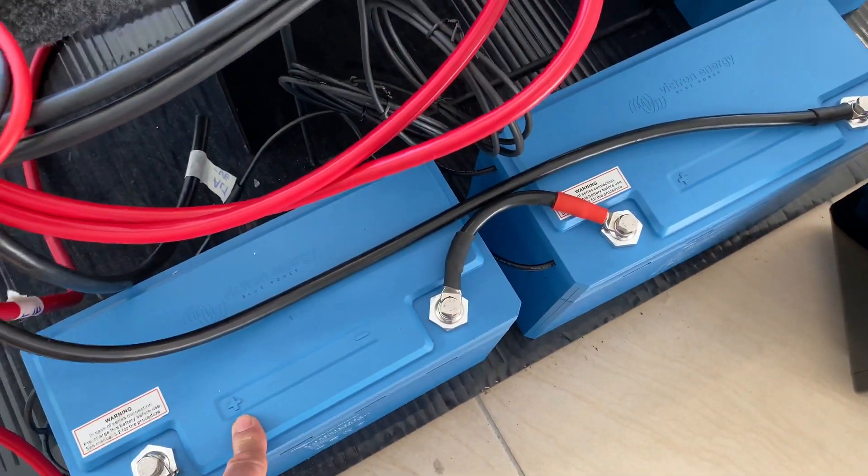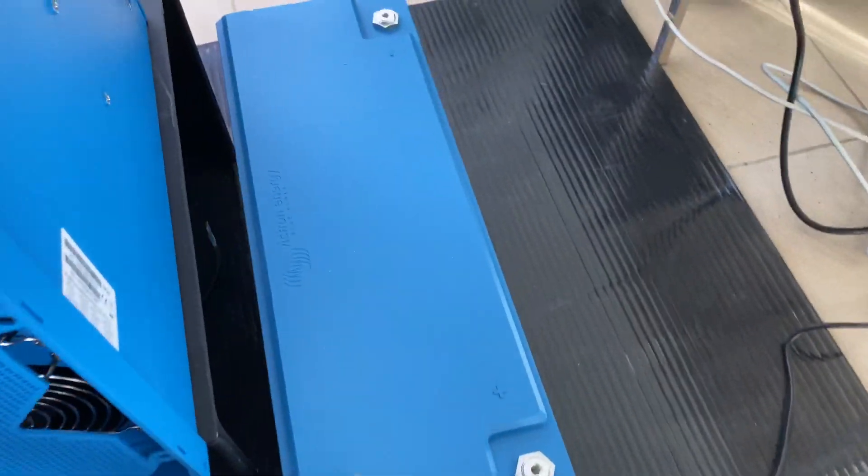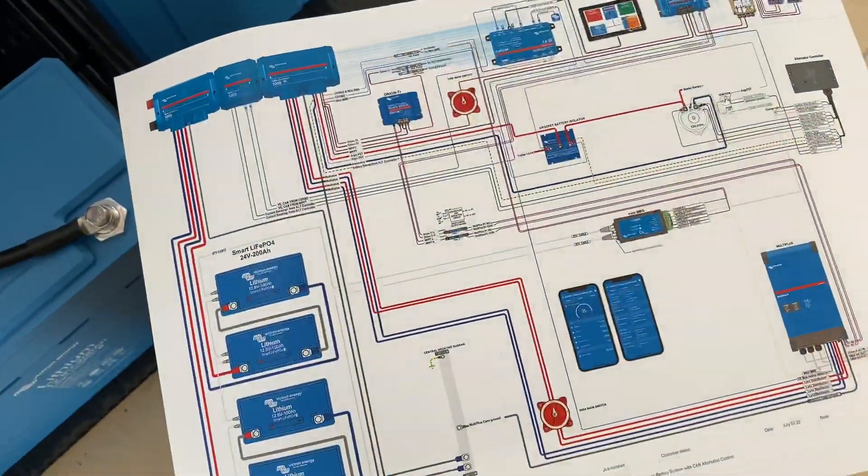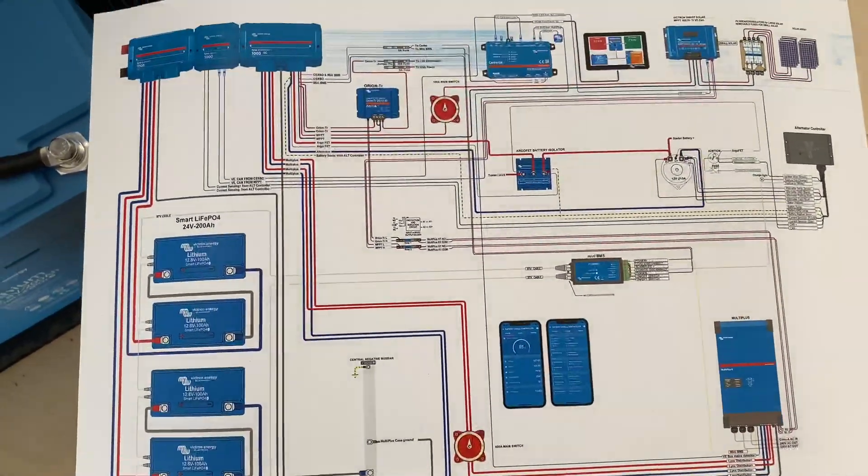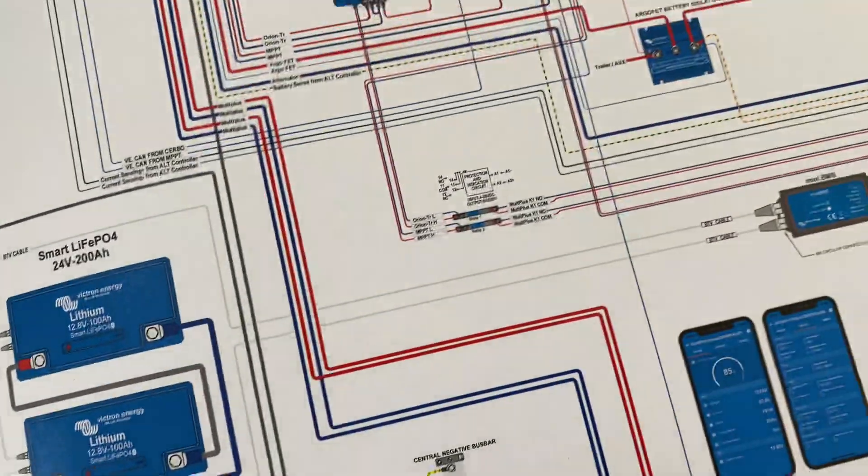These are smart lithium batteries, 12-volt 200 amp hours each. They're wired in series to create a very large single 24-volt battery. We gave Jeff quite a detailed drawing of how to wire this up as part of the agreement, and you can see the attention to detail in how it's wired up.